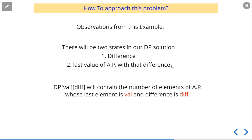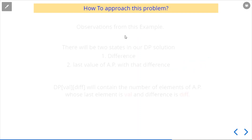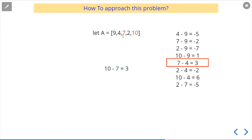From these observations, there will be two DP states: the first is the difference, and the second is the last value of the arithmetic progression with that difference. We make a 2D DP matrix of (value, difference). For example, if the last value is 7 — meaning we track series ending at 7 — and the difference is 3, then we check: is there any number in the later positions that is 3 away? Yes, 10 exists because 10 minus 7 equals 3.